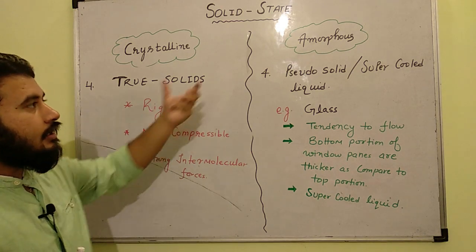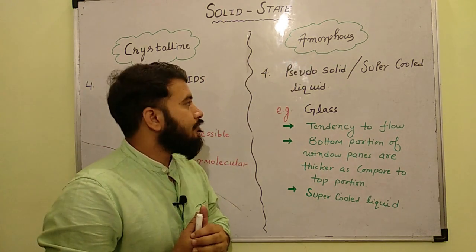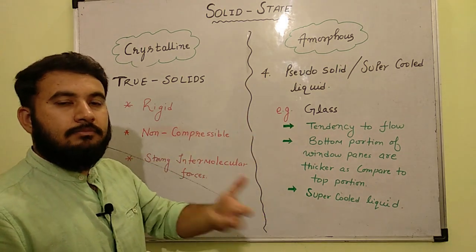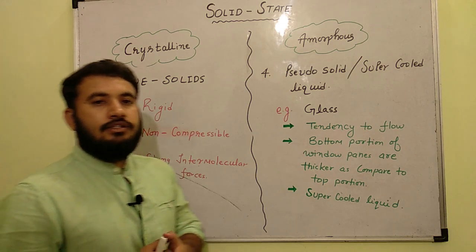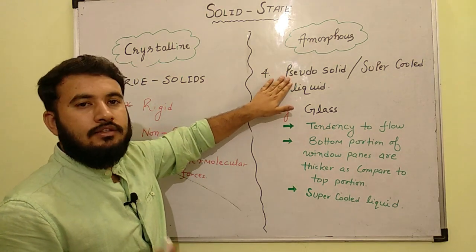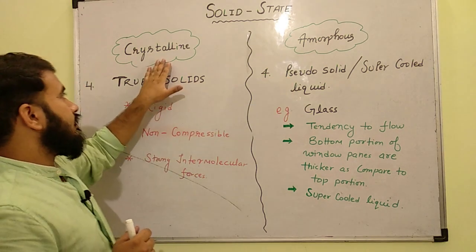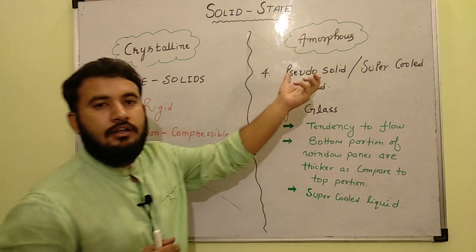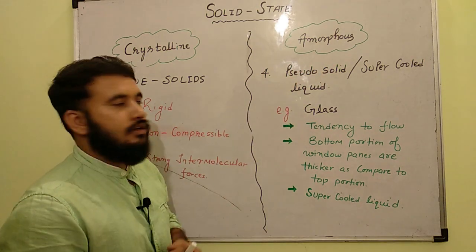But if we talk about amorphous solids, in case of amorphous solids, which are amorphous solids are basically like glass, pitch, all these things are called pseudo solids. Now word pseudo means false. Like in crystalline solids, they are true solid. So we can say that amorphous solids are false solids or pseudo solids.